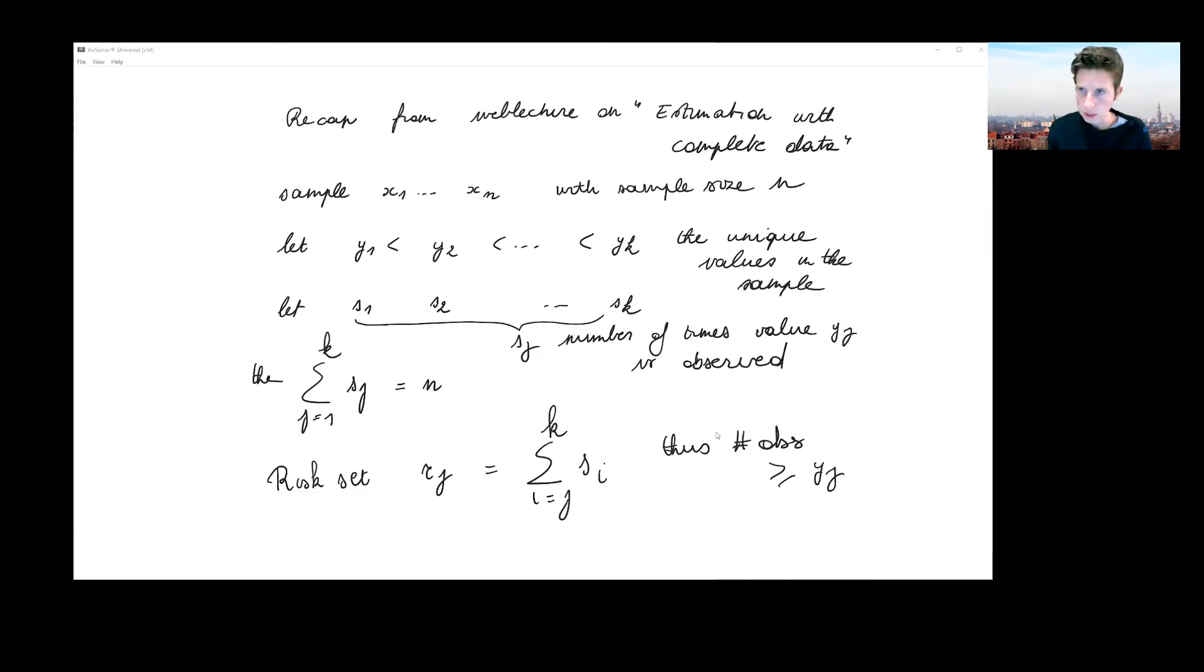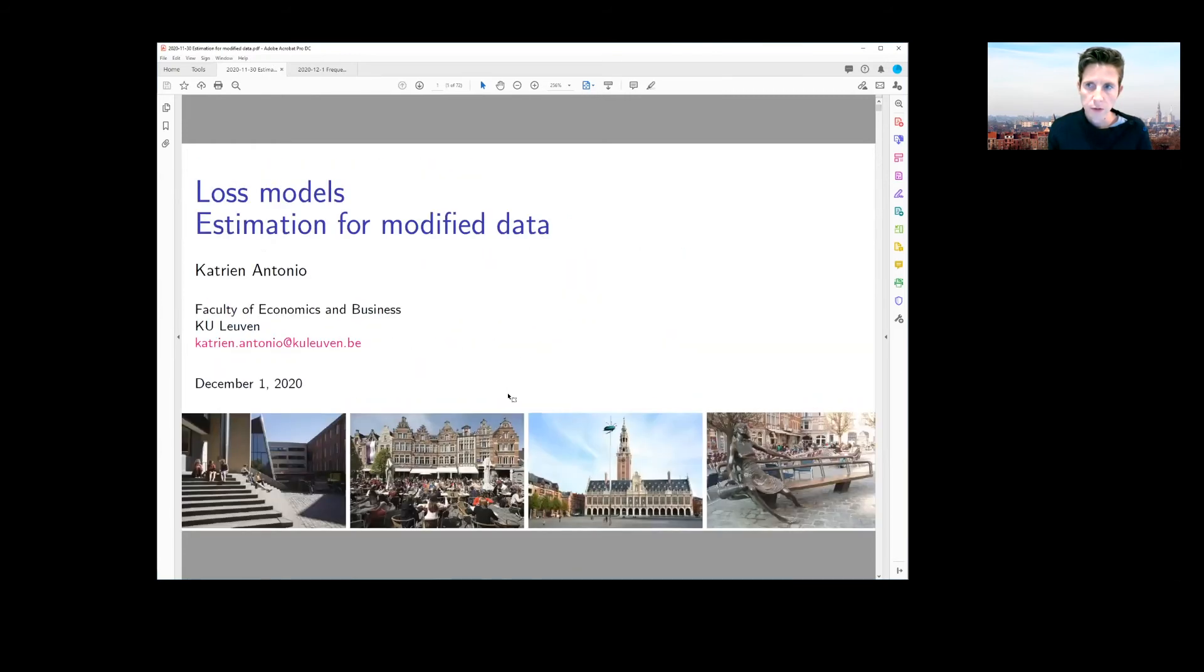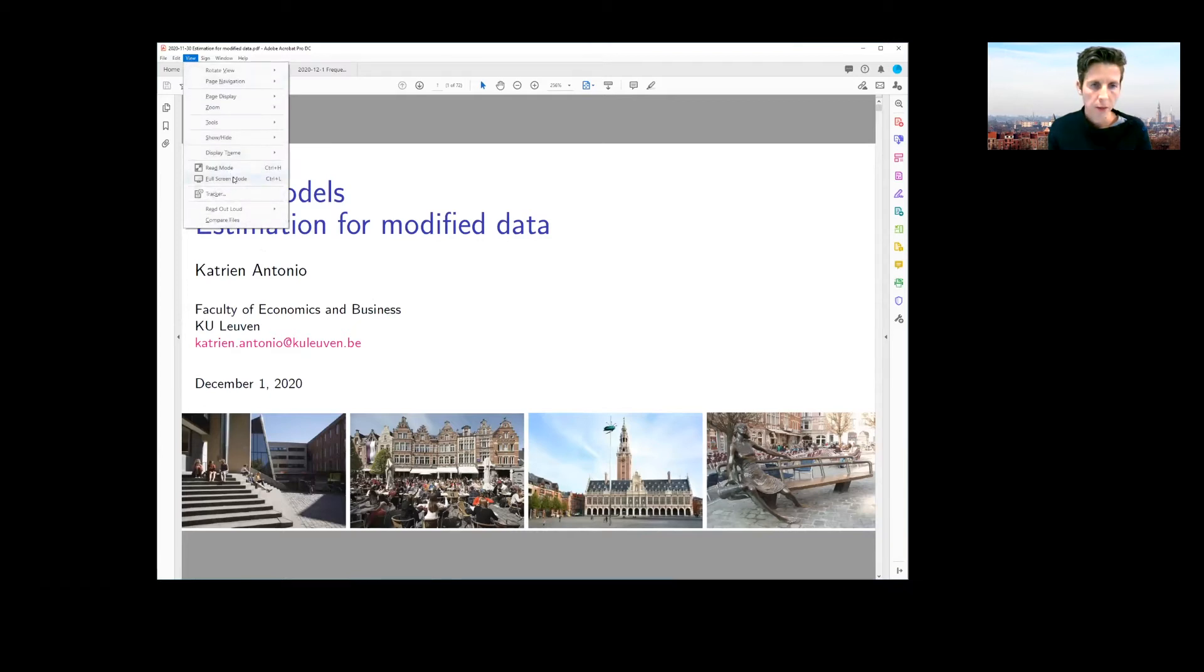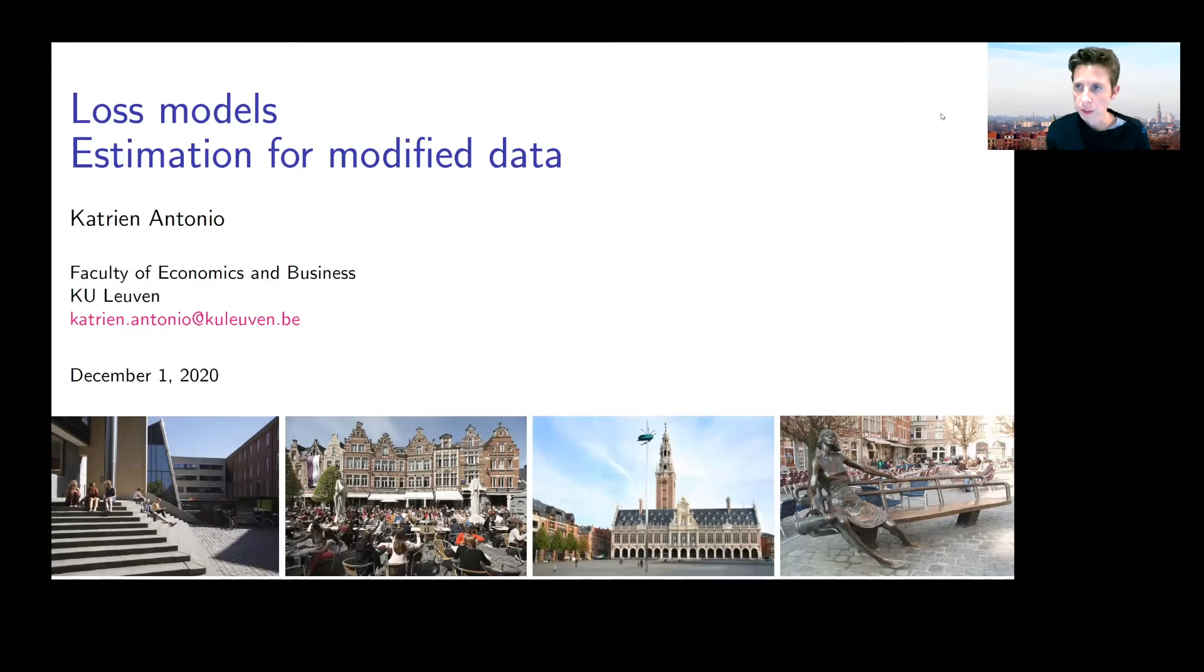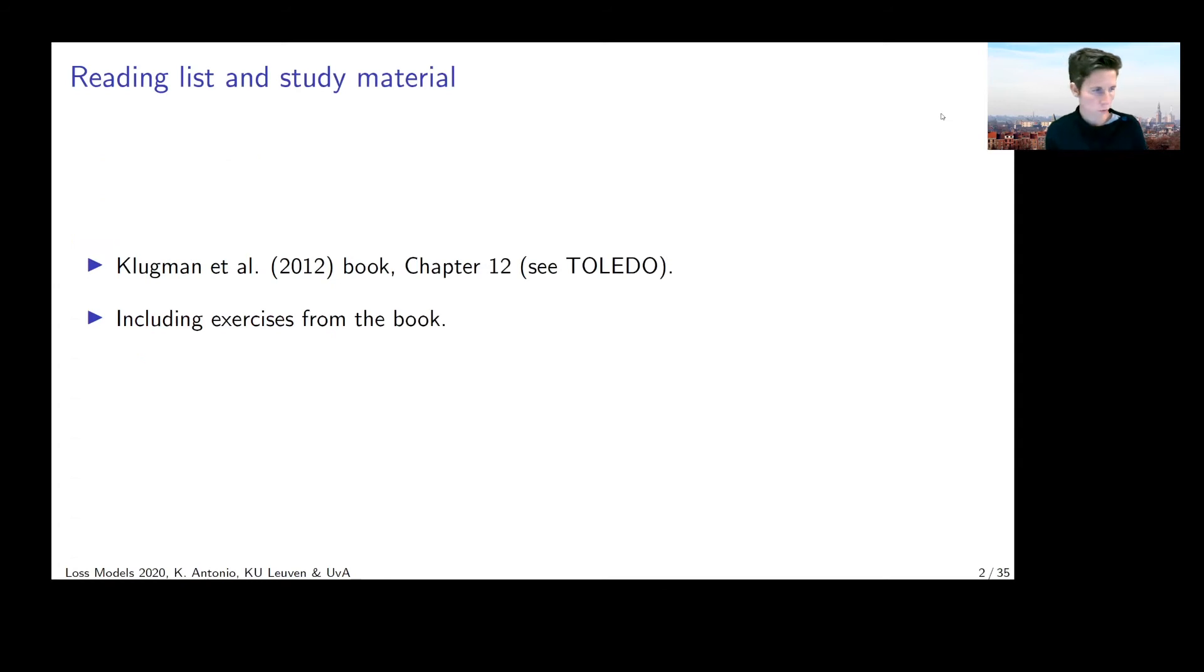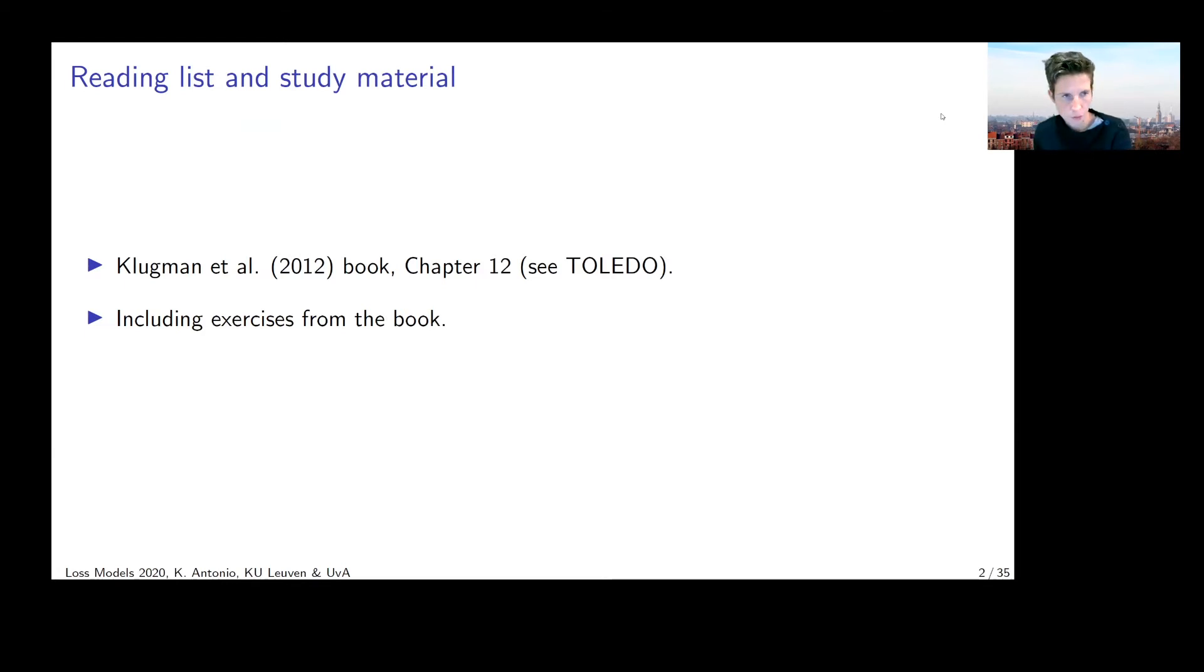Now I'm going to the sheets for today covering estimation for modified data. I'll explain first what we mean with modified data. Then we'll start with a non-parametric estimator to have some grip on the survival function or cumulative distribution function in the presence of modified data. Next chapter we'll see how to fit a parametric model. This is chapter 12 from our book. Chapter 11 was reviewed last week, and today we're moving on with chapters 12 and 13.